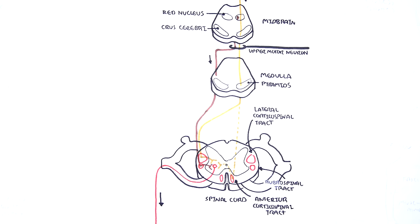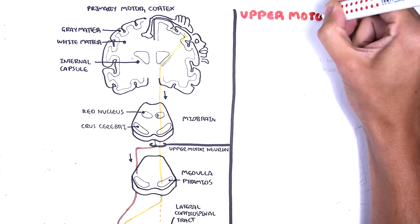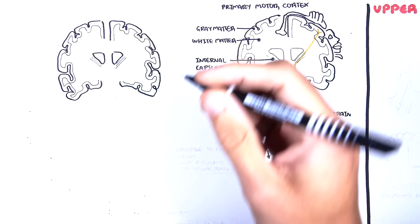In summary, the upper motor neuron transmits information from the brain to the spinal cord or the brainstem. Lower motor neurons transmit information from the brainstem or spinal cord to the skeletal muscles. Clinical findings on examination can indicate whether a motor disorder is due to an upper or lower motor neuron lesion. Before going into the clinical examination, let's look at some causes of upper and lower motor neuron lesions, beginning with the upper motor neurons.